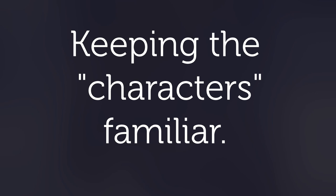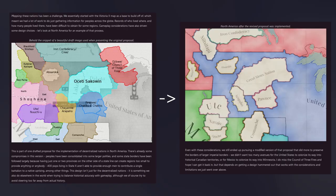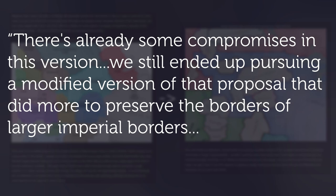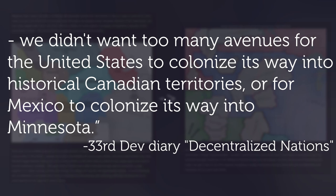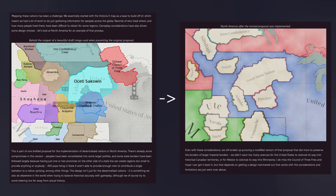There are of course certain abstractions and sacrifices made to keep history from becoming too derailed — to keep the characters a bit familiar, down to aesthetics. The developers made some choices to preserve some degree of familiar borders. Looking at the decentralized nation dev diary: they outline prior iterations of the border for North America, especially the Great Plains, and explain their thinking. There were already compromises — they pursued a version that did more to preserve larger imperial borders, not wanting too many avenues for the United States to colonize into historical Canadian territories or for Mexico to colonize into Minnesota.